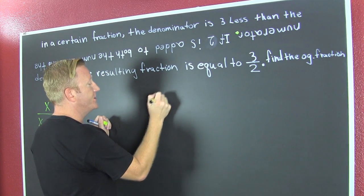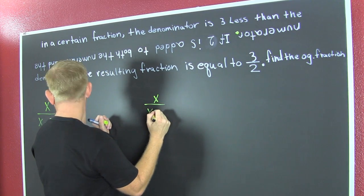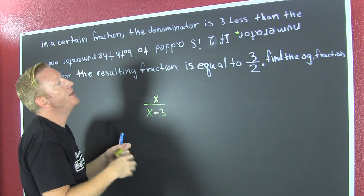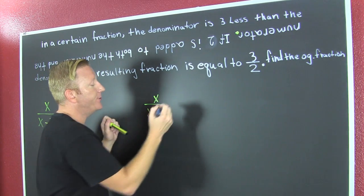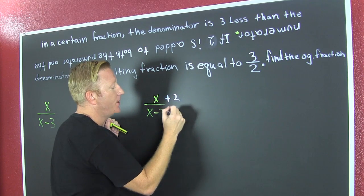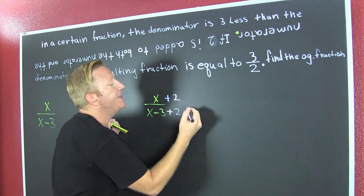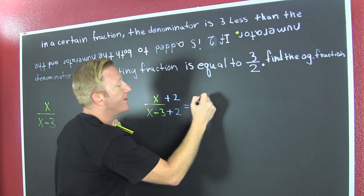So, I have my certain fraction, x over x minus three. And what do we do? We're gonna add two to both the numerator and the denominator. Plus two, plus two. And then what? That's equal to three halves.